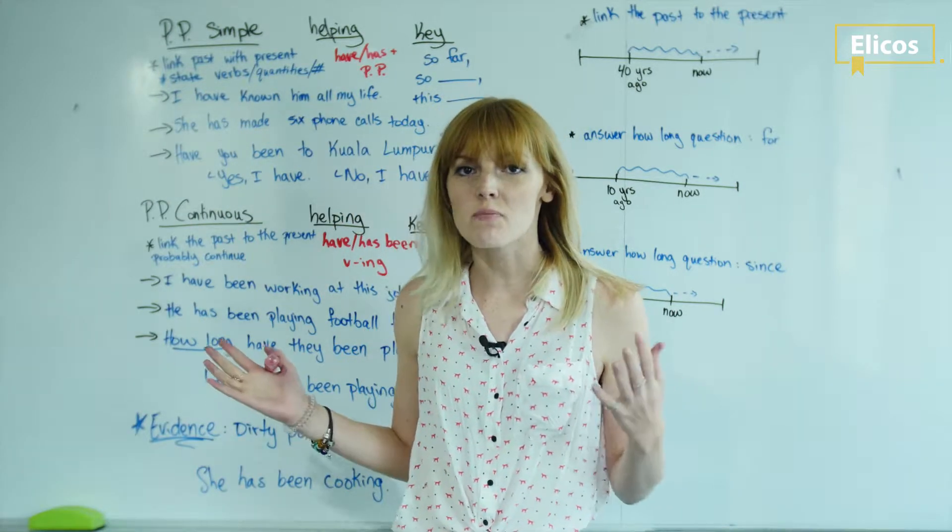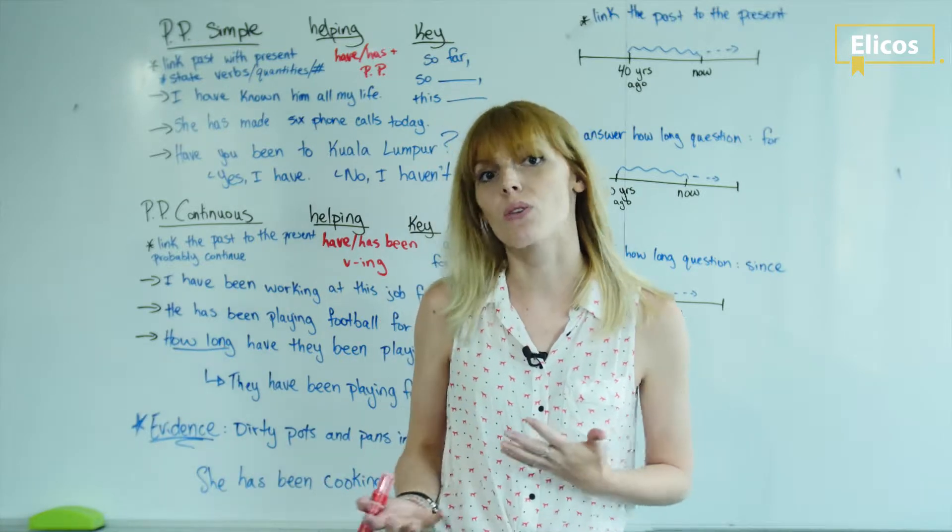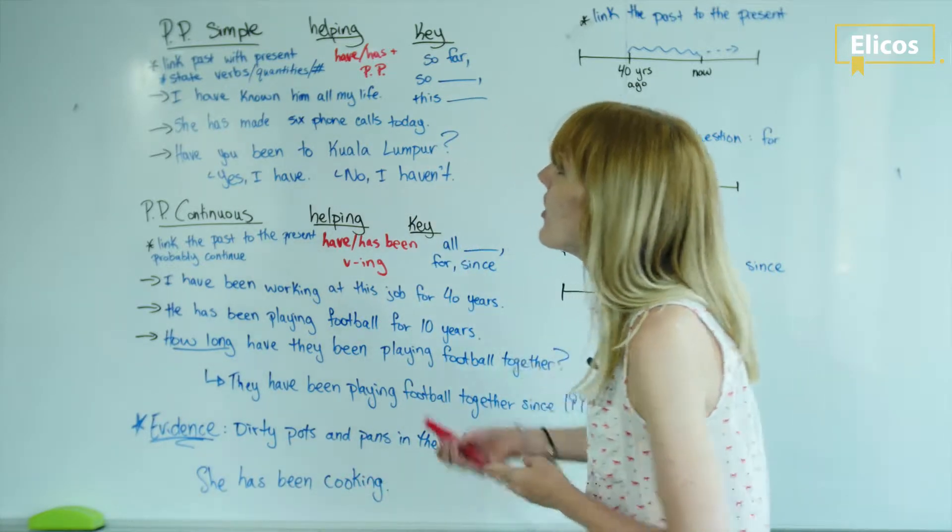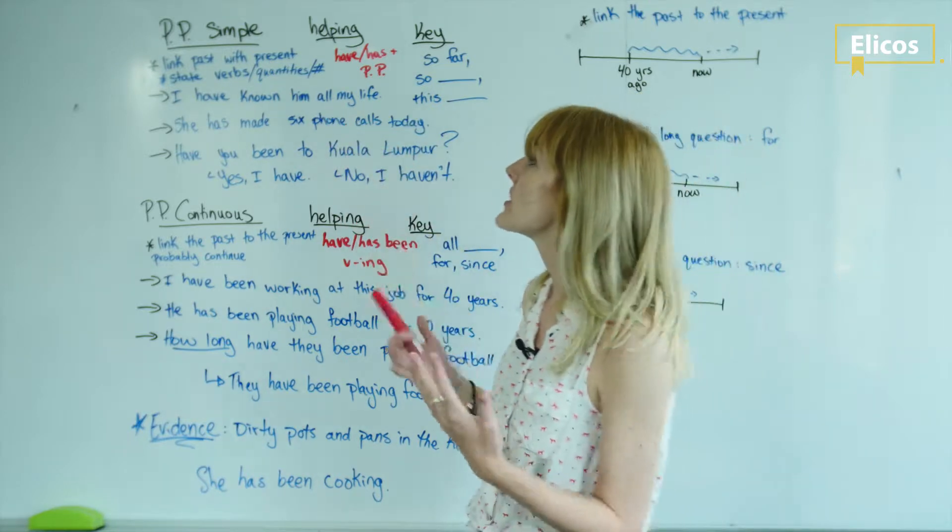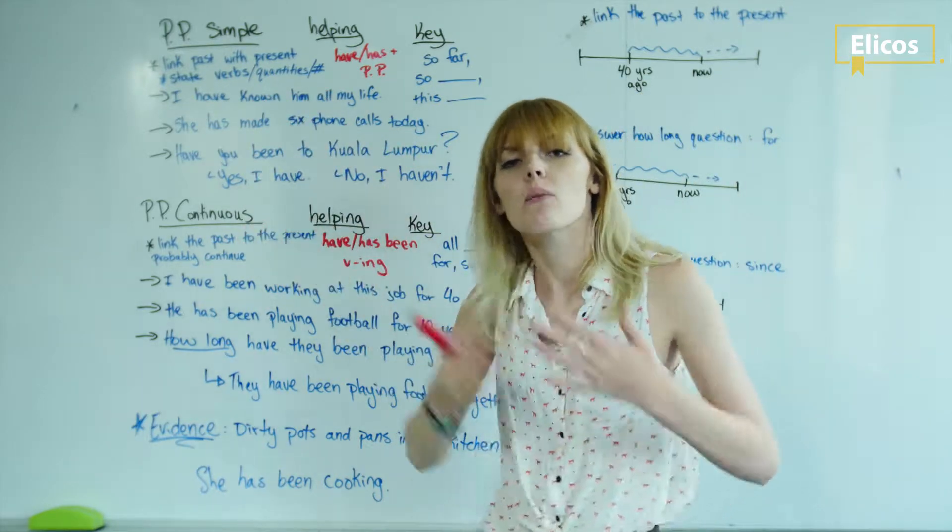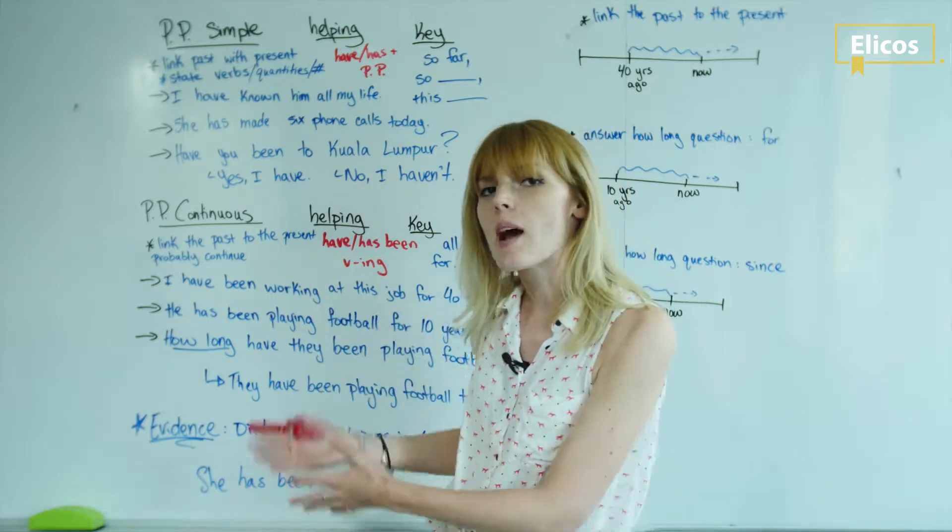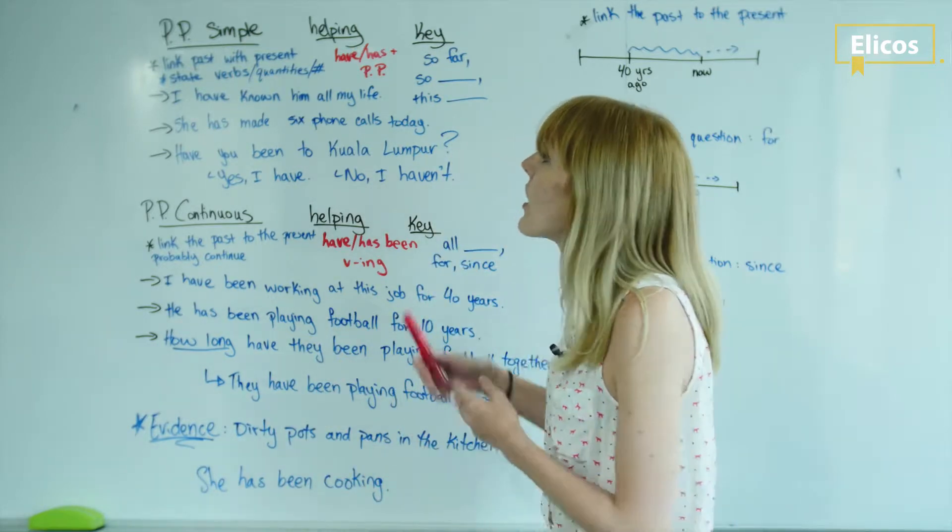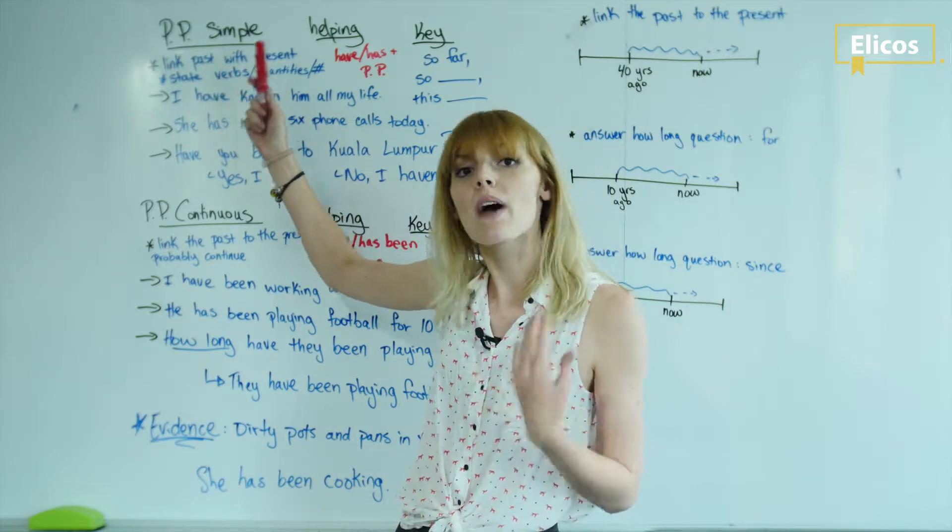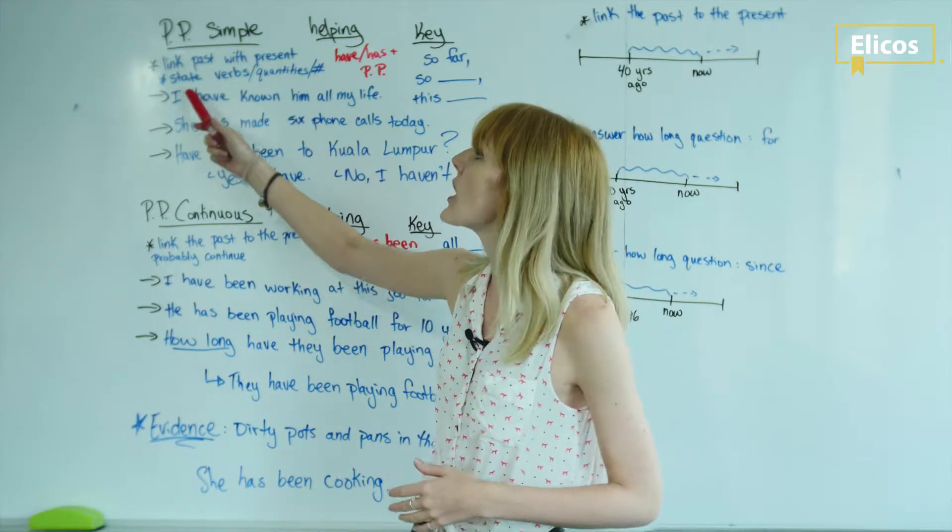Okay, so there's a lot of information on the board so let me work through it with you. When we use the present perfect simple, we use it to link the past with the present. Something that happened in the past is important for now. What's important to remember about the present perfect simple is that we always use it for state verbs or we often use it with quantities or numbers as well.